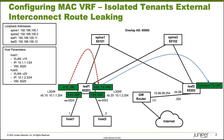Here is our topology. We have a few devices: Spine 1, Spine 2, Leaf 1, Leaf 2, the gateway router, and Host 1 and Host 3. The spines and leaves are part of the IP fabric in the data center. We already have VXLAN configured, and we also have the MacVRFs configured as well. I've also pre-configured some of the other VRFs.